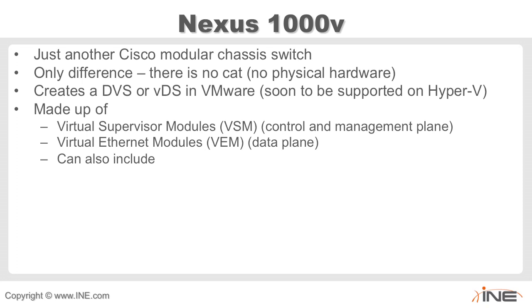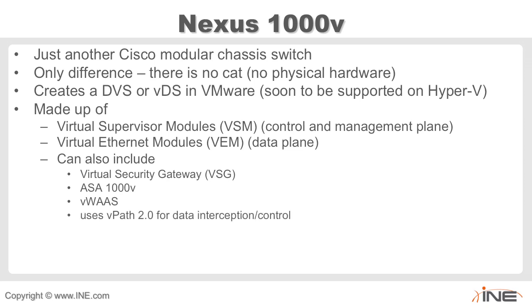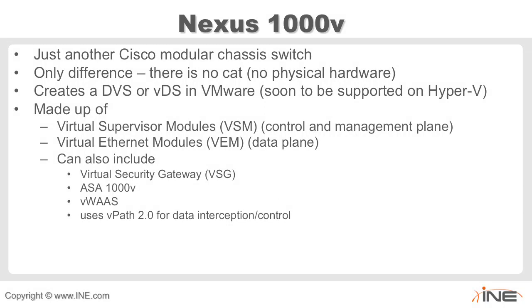This can also include other modules called VSBs, or virtual service blades. These can be things such as VSG — virtual security gateway — the ASA 1000V, VWAS, and these use something called VPath 2.0 for interception and control of packets. There's also something soon to be released called the Cloud Services Router, or CSR, utilizing the same features, functionalities, and architecture of the Nexus 1000V, but for a router platform.